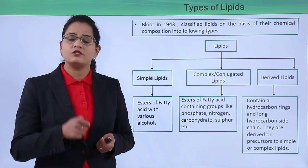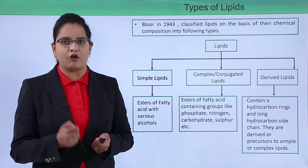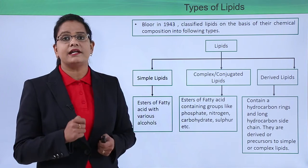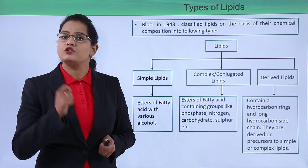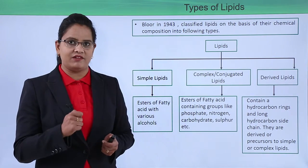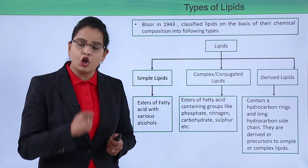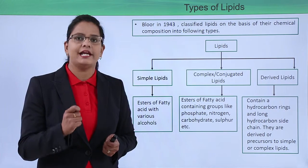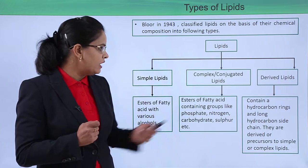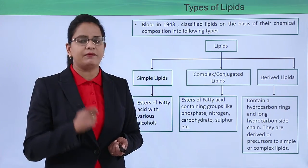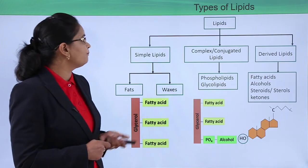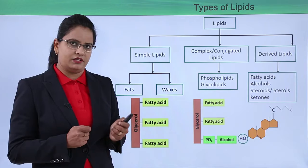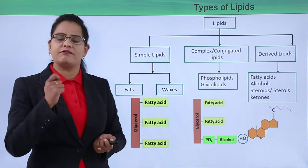Derived lipids are derived from simple or conjugated lipids, or they can be precursors to the formation of these types of lipids. The speciality of derived lipids is that they contain a hydrocarbon ring along with a long hydrocarbon chain, which can also be called the tail of the derived lipid molecule.